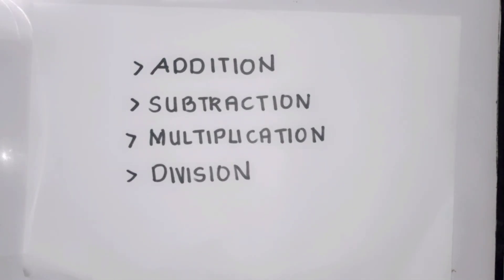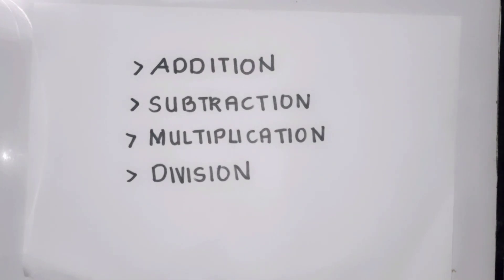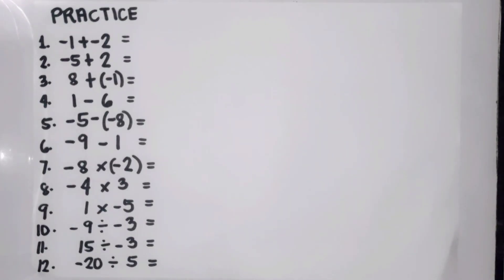To sum up the rules for operations on integers: in addition, when the signs are the same — both positive or both negative — add the absolute values and copy the sign. If the signs are different, proceed to subtraction and copy the sign of the number with the larger absolute value. For subtraction, copy the first number, proceed to addition, and change the sign of the second number, then follow the addition rules. For multiplication and division, same signs give a positive answer; different signs give a negative answer.